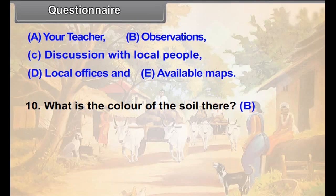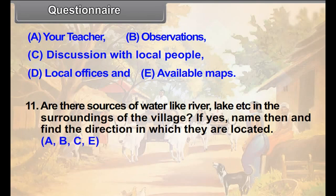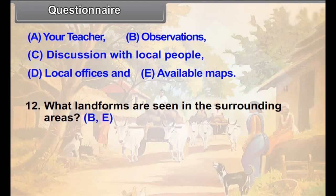Question 10: What is the color of the soil there? Question 11: Are there sources of water like river, lake, etc. in the surroundings of the village? If yes, name them and find the direction in which they are located. Question 12: What landforms are seen in the surrounding areas?